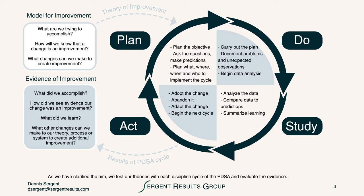The theory of improvement that you create gives you an idea about what would be an improvement. The model for improvement has three questions that link your theory to a test — a scientific test — to get the evidence and learn if it works or if it doesn't work.